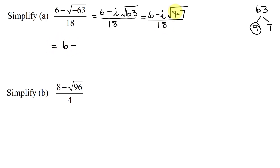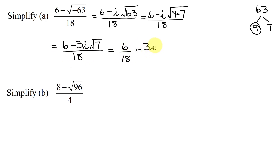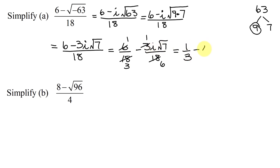This gives me 6 minus — the square root of 9 is 3 — so I have minus 3i. The square root of 7 can't be simplified, so just multiply by the square root of 7, all divided by 18. The simplest way to reduce this is to break it up into two terms: 6 divided by 18, minus 3i times the square root of 7 divided by 18. I can reduce the 6 with the 18: 6 goes into 6 once, into 18 three times; 3 goes into 3 once, into 18 six times. So I get 1/3 minus i times the square root of 7, all divided by 6.